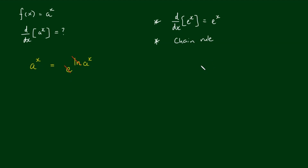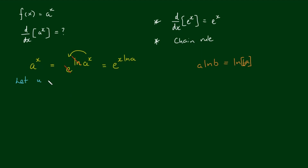Using the log law that a times the natural log of b equals the log of b to the power of a, we can rewrite the right hand side as e to the power of x times log of a — that just brings the x down to the front. Now we make the substitution: let u equal x times the natural log of a, so e to the x·log(a) becomes e to the u.